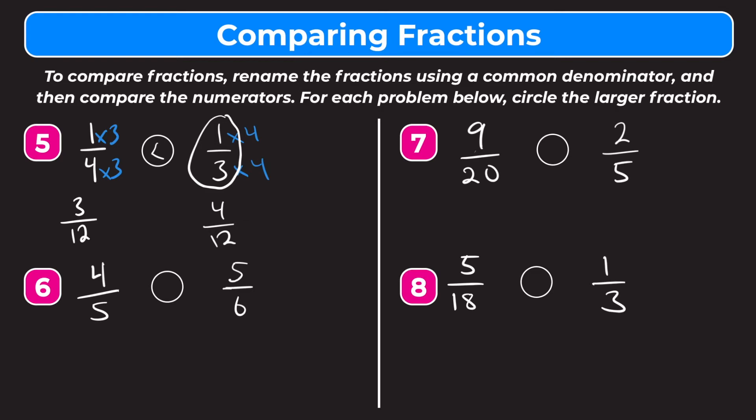A trick you can use when fractions have one as the numerator: the fraction with the smaller denominator is always going to be the larger fraction. This is because if you divide something into three equal parts versus four equal parts, one of the three equal parts is going to be larger because there are fewer of them. For example, half of something is larger than one-fifth of the same thing. So when comparing fractions with one as the numerator, the fraction with the smaller denominator is always going to be the larger fraction.